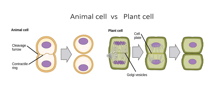In animal cells, a cleavage furrow — that is the contractile ring — forms in the center and splits into two daughter cells. In plant cells, a cell plate is formed in the center, clearly forming two daughter cells. That is the main difference of cytokinesis in animal cells versus plant cells.